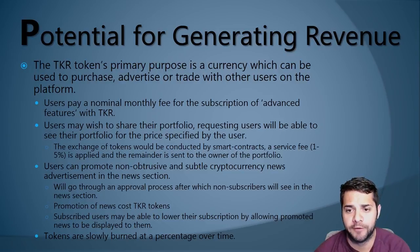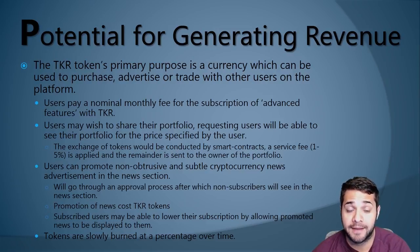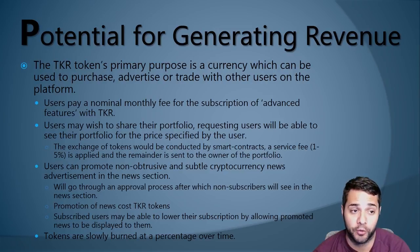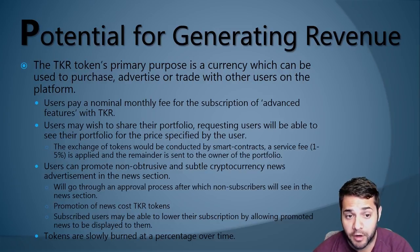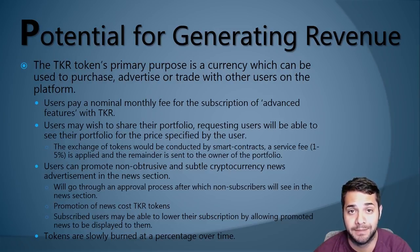For the potential for generating revenue: the TKR token is used to purchase, advertise, and trade with other users on the platform. Users can pay a monthly fee as a type of premium subscription where they get advanced features. Users can share their portfolio and the requesting user can see it for a price specified by the owner — this is conducted by a smart contract with a fee between 1% to 5%, and the remainder is sent to the owner. Users can also promote cryptocurrency news as it's displayed in the news section. This news goes through an approval process after which non-subscribers can see it in their news section.